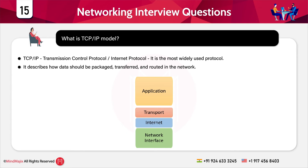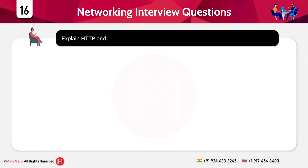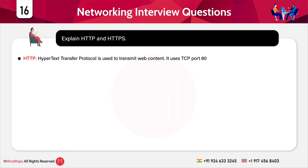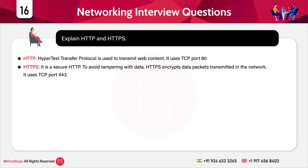The next question is: explain HTTP and HTTPS. HTTP stands for Hypertext Transfer Protocol and is used to transmit content across the web; it uses TCP port 80. HTTPS is secure HTTP — to avoid tampering, data loss, or data theft, HTTPS encrypts the data packets transmitted in the network. Encryption means transforming data into a format understood only by the sender and receiver, keeping it safe from hackers. HTTPS uses TCP port 443.